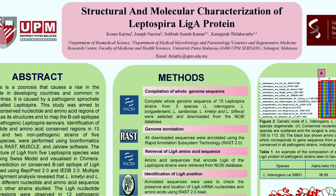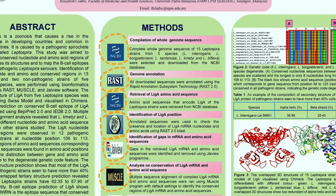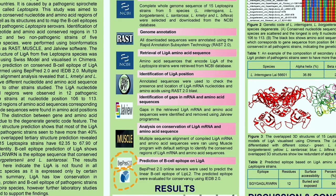Now let's look at the methods. Identification of LiA nucleotide and amino acid conserved regions in five Leptospiral species were performed using bioinformatic tools such as RAS, MUSCLE, and Java software. Lastly, the prediction of conserved B-cell epitopes of LiA was performed using BepiPred 2.0 and IEDB 2.0 server.